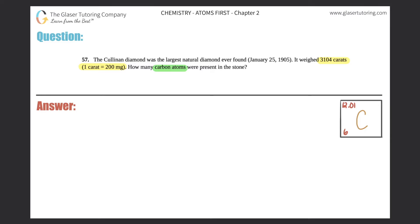They started us off with 3104 carats. Carats of what? They tell us it's a diamond, but we should know that diamond is made up of one element - just carbon. It's basically carats of C and they want to know how many carbon atoms are there.